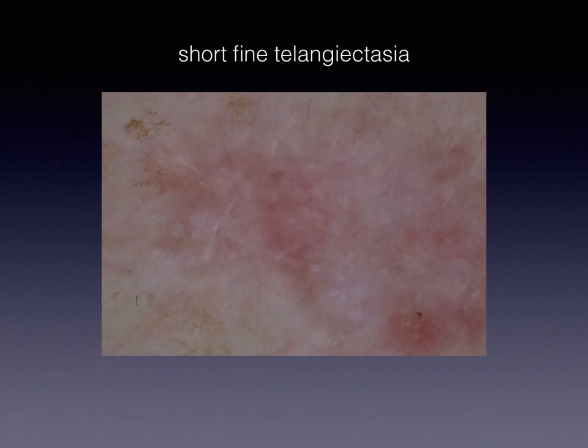The second type of vessels that can be seen in basal cell carcinoma are the so-called short fine telangiectasias, which typically characterize superficial basal cell carcinoma. These vessels are not prominent, not in focus, and might be seen either in the center or at the periphery of the tumor. However, they are still always linear.